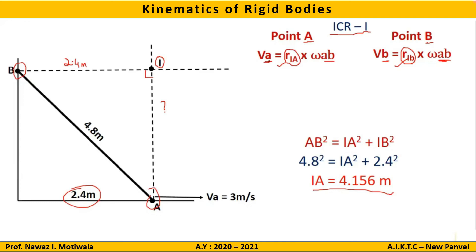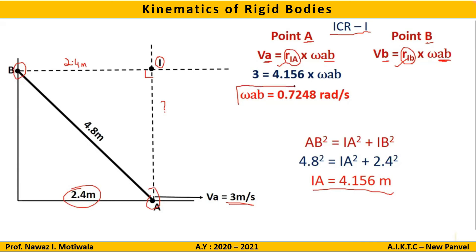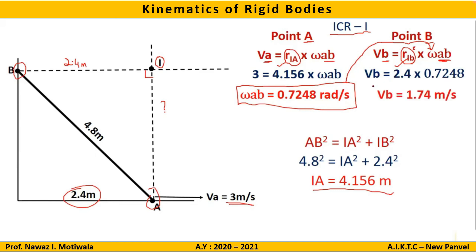Now substitute the known values. VA is given as 3 meters per second, and R_IA is 4.156 meters, so from the equation VA = R_IA × ω_AB we get ω_AB equal to 0.7248 radians per second. Substituting this value of ω_AB along with R_IB equal to 2.4 meters into the equation for VB gives VB equal to 1.74 meters per second. This completes the entire solution.